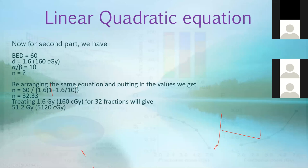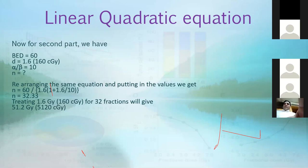Solving for n: n = 60 / [1.6 × (1 + 1.6/10)] = 32.33, rounded down to 32 fractions. So the patient receives 160 cGy × 32 fractions = 5120 cGy total, compared to the original 200 cGy × 25 = 5000 cGy. The total dose changes when fractionation changes, because the number of fractions changes — always verify this before treating.